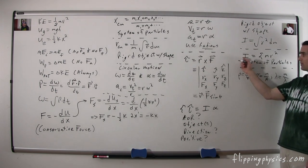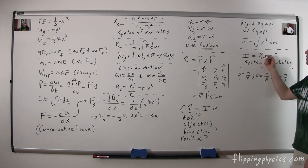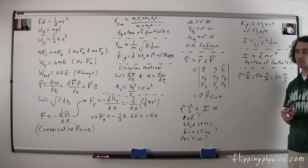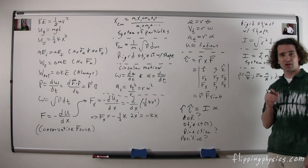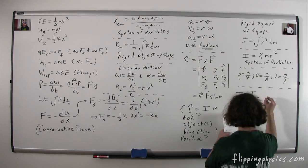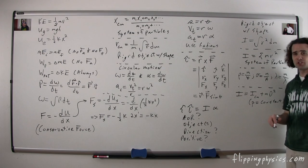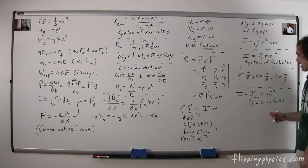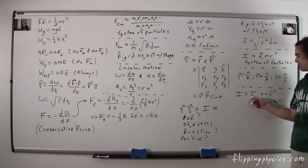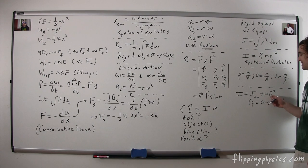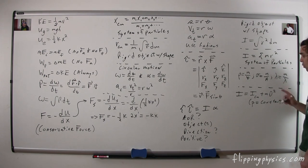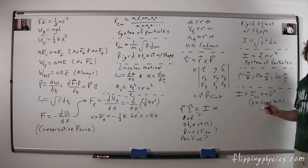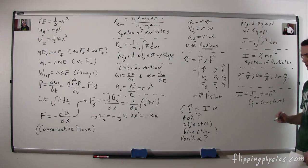For a system of particles, the moment of inertia is equal to the sum of mr², where r is the distance from the axis of rotation. You also need to remember the parallel axis theorem: I = I_cm + Md², where d is the distance from the center of mass to the new axis of rotation. Important: the parallel axis theorem only works with a constant-density object.